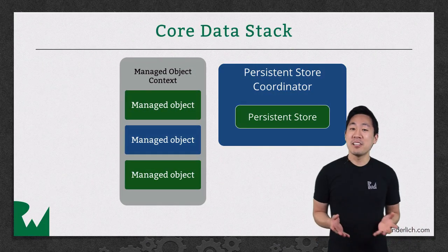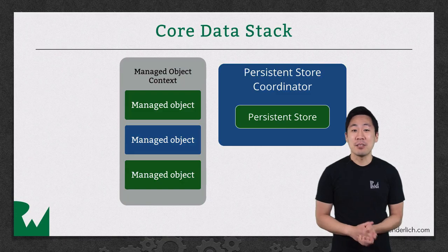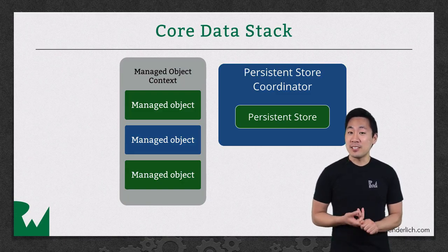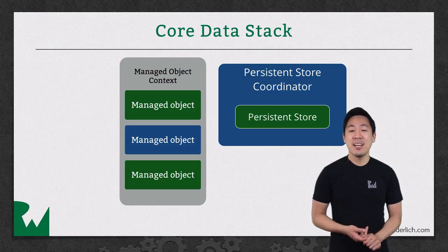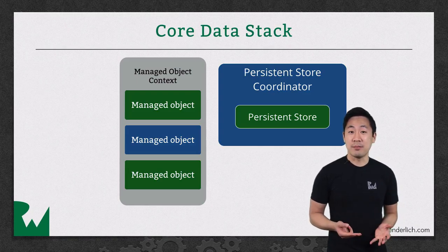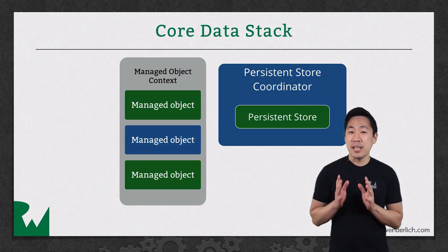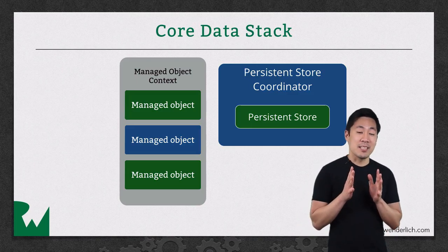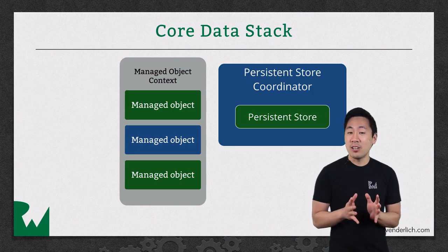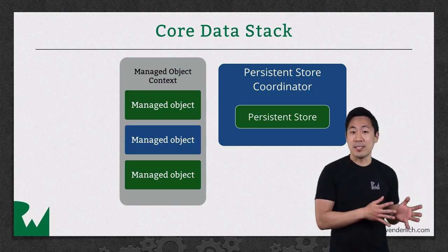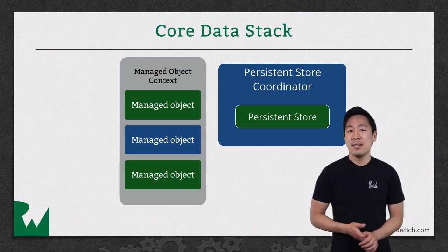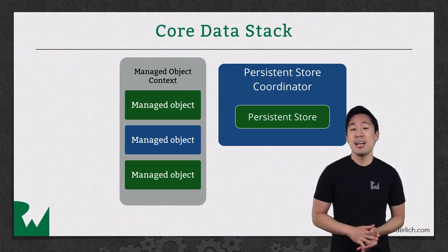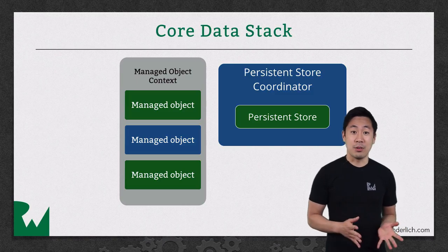Throughout this beginner series we've also taken a look at some parts of the Core Data stack. That includes the managed object context, persistent store, and the persistent store coordinator. We've been passing the managed object context around from the app delegate to the root view controllers in the tab bar controllers, and then on to other view controllers pushed onto the navigation stack. That's a simple way to handle it, as we've only needed to access the managed object context and not other parts of the stack so far.